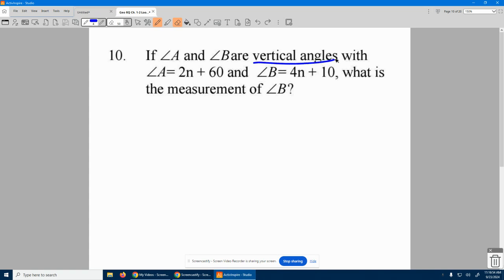Well, if they're vertical angles, that means angle A equals angle B. So that means the 2n plus 60 has to equal the 4n plus 10. That's what it means.